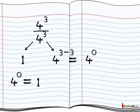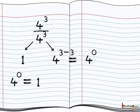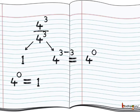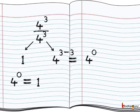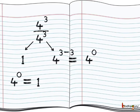Now let us divide 4 to the power 3 by 4 to the power 3. If we divide a number by the same number, the result would be 1. Here the bases are same, so its result would be 4 to the power 3 minus 3, which is equal to 0.